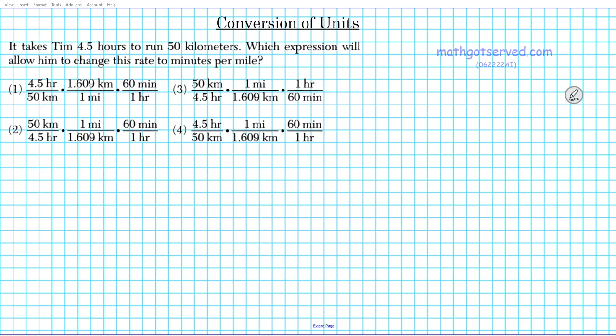Good day students, welcome to mathgotserved.com. In this clip we're going to be taking a look at how to carry out conversion of units. The question reads: It takes Tim 4.5 hours to run 50 kilometers.